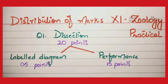Coming towards question number one, which is dissection — it has 20 points, meaning it is a two-mark question. It has two parts. In your copy, you have to draw a labeled diagram with proper spelling — a neat and clean diagram with correct labelings — which has 5 points. You also have to perform the dissection and make all required parts visible, whether it's of a frog or a cockroach, to gain the 15 points awarded for performance.